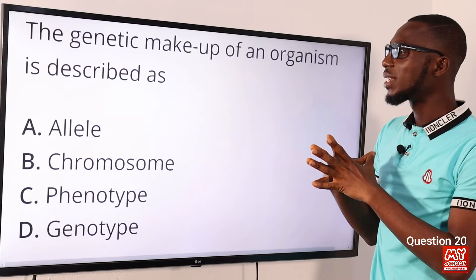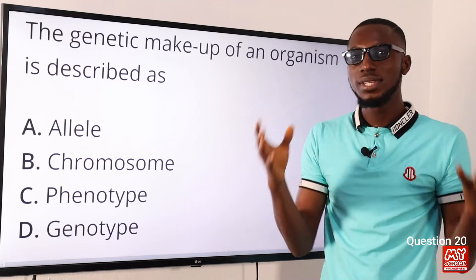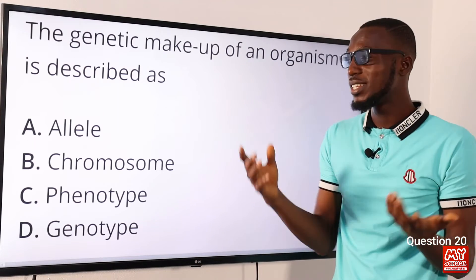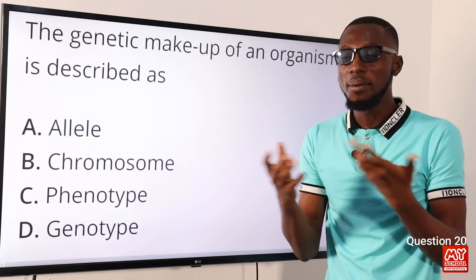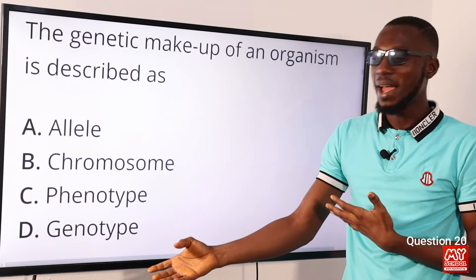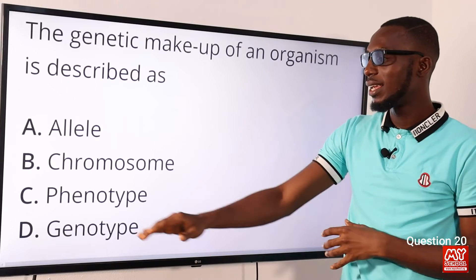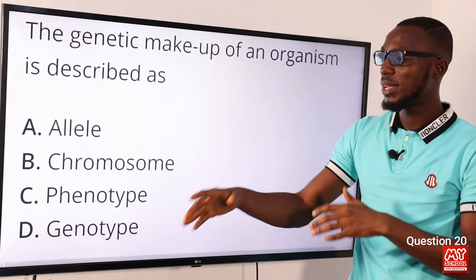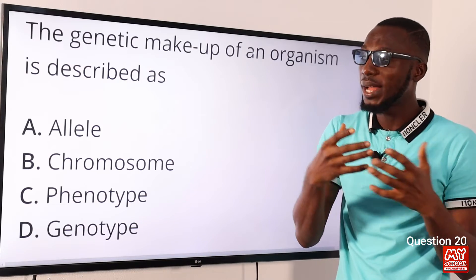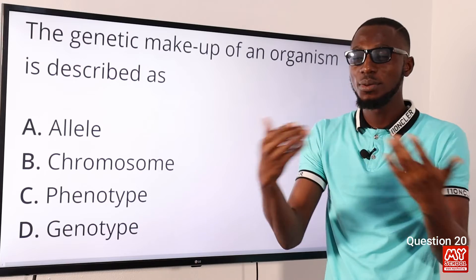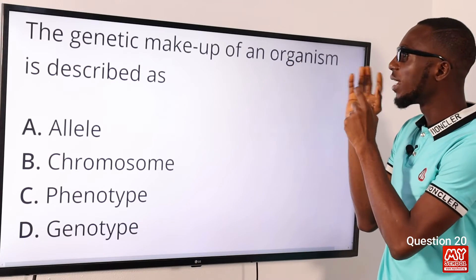Question twenty: the genetic makeup of an organism is described as what? The sum total of genes an organism inherits from its parents is the genotype. The physical expression of characteristics is the phenotype — a combination of the genotype and environmental interaction. So the genetic makeup of an organism is described as the genotype — option D.